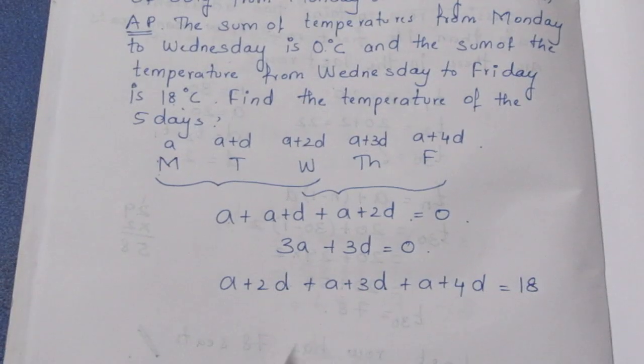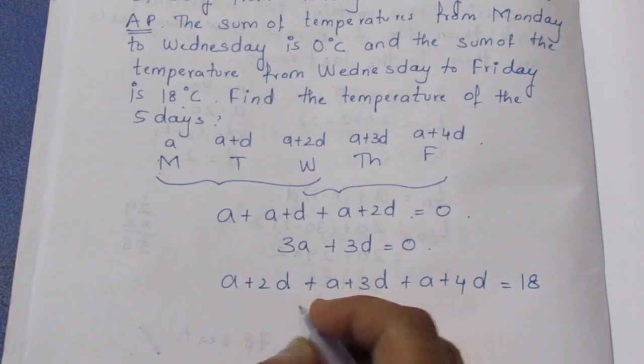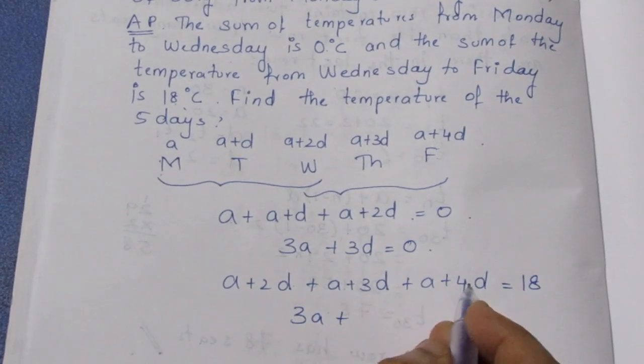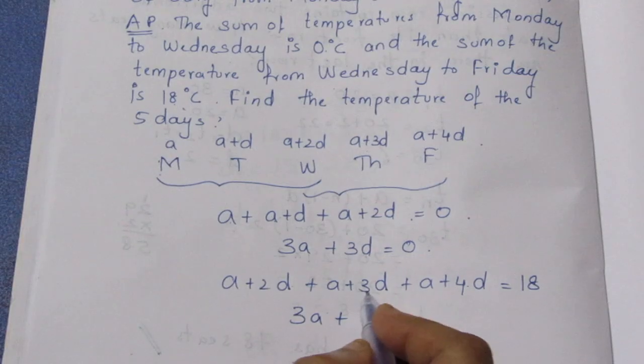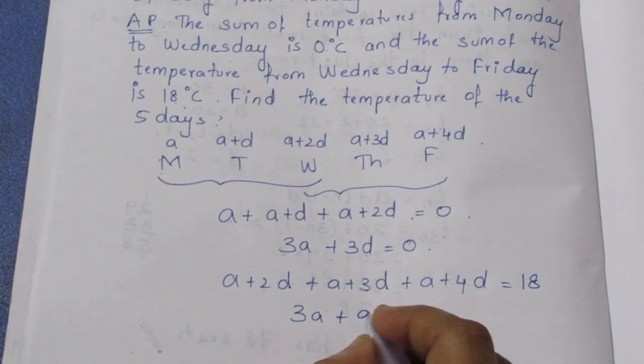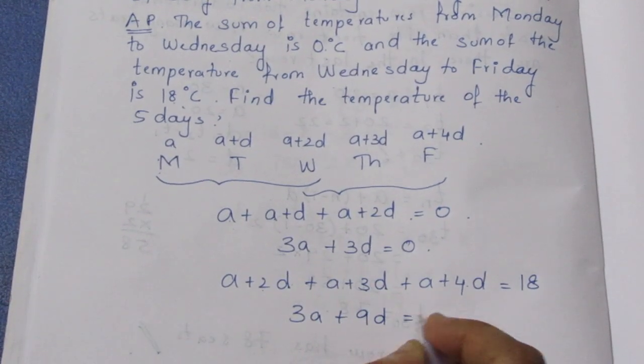Solving this: 3a plus 4d plus 5d plus 9d — simplifying, we get 3a plus 9d equal to 18. This is our second equation.